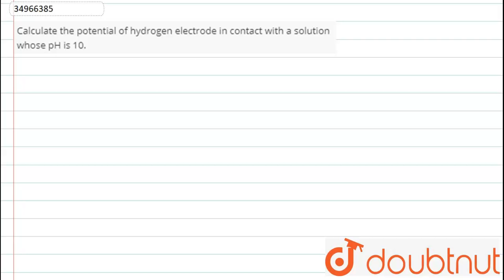In this question we have been asked to calculate the potential of hydrogen electrode in contact with a solution whose pH is 10.